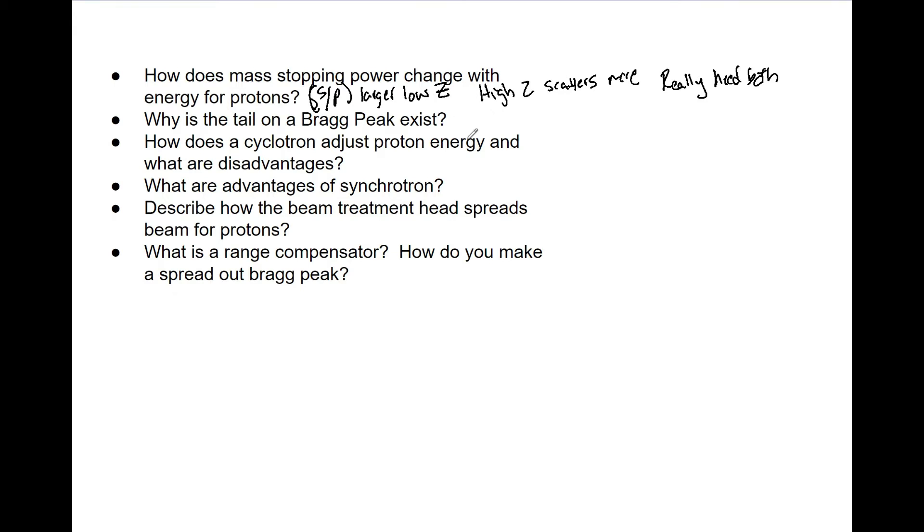So how does a cyclotron adjust proton energy and what are their advantages? It uses an energy degrader of plastic materials. Remember what we said: low Z materials slow protons down more than high Z. You're going to use a plastic material of various thickness in a wheel that alters the proton energy and range. The degraders cause neutrons, require more shielding, and have post-treatment radioactivity. Although they may be necessary to give you a range of energies, there are those three big disadvantages.